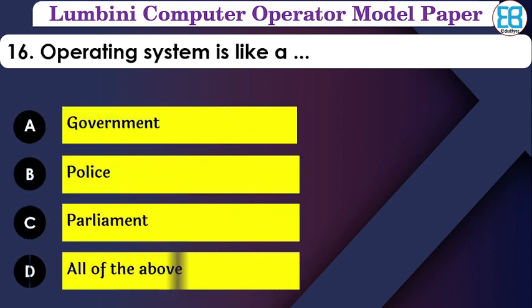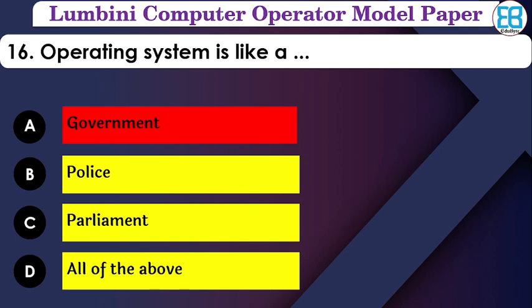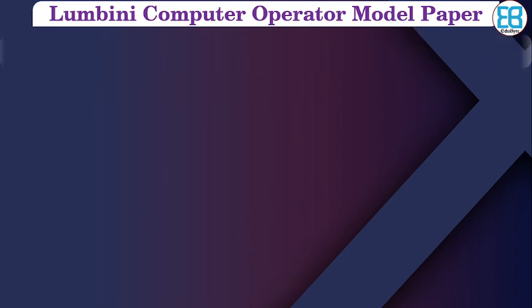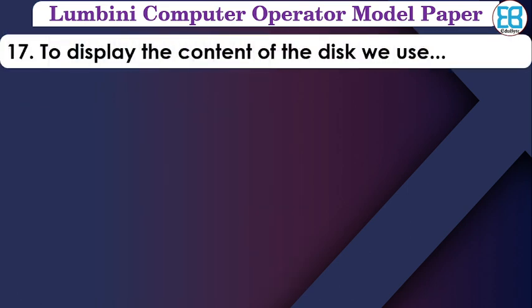What is the operating system like? It is like a government — just as government controls the police, parliament, and all departments, the operating system acts as a bridge between hardware and the user, managing and controlling everything.